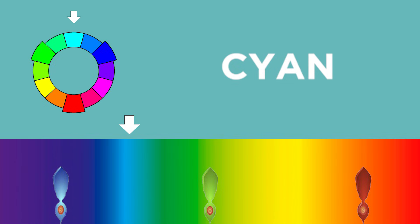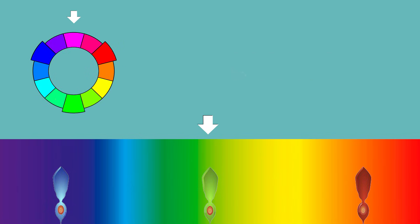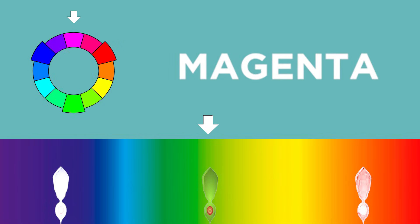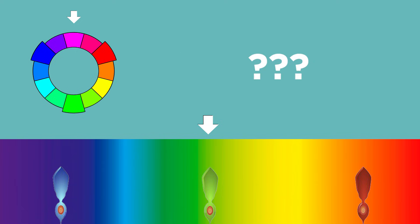Yellow and cyan are the subtractive primary colors. Magenta should be a combination of red and blue, but the halfway point between red and blue on the spectrum is green. Obviously we don't see green — we see a color that is nowhere on the light spectrum. Our brain just makes it up. So even though magenta is one of the primary pigment colors, it doesn't have an actual wavelength associated with it. It is completely made up in our brains.